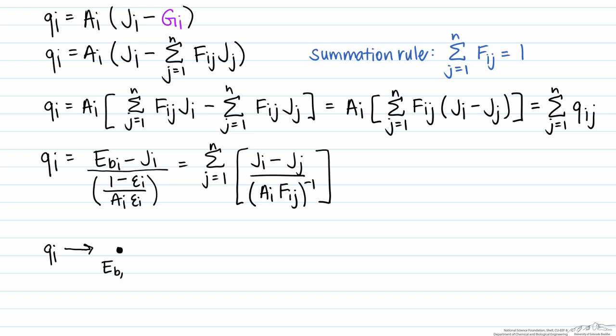We start with this emissive power of a black body. And again, this is part of the driving force, where the resistance, 1 minus the emissivity, over the emissivity times the area.